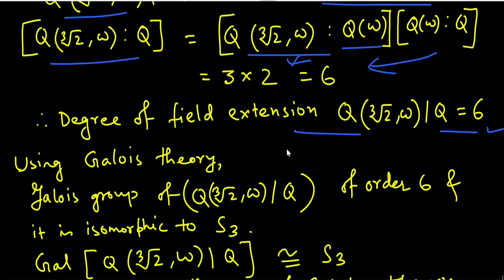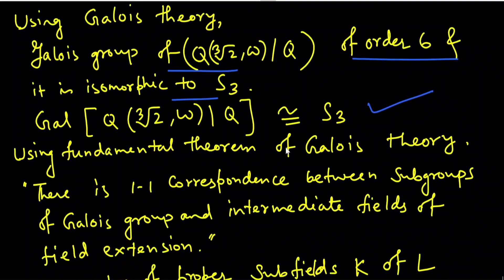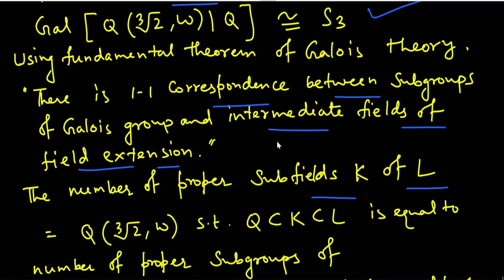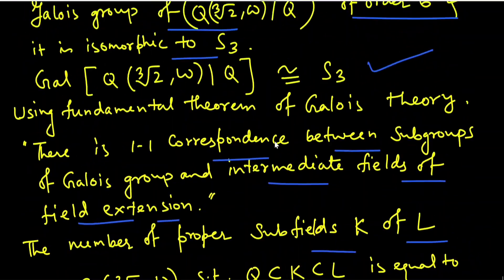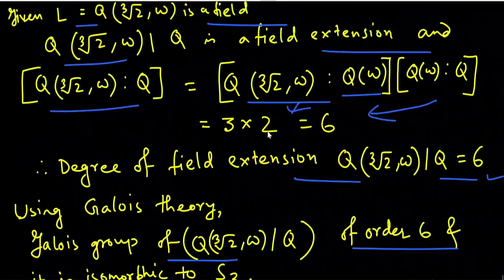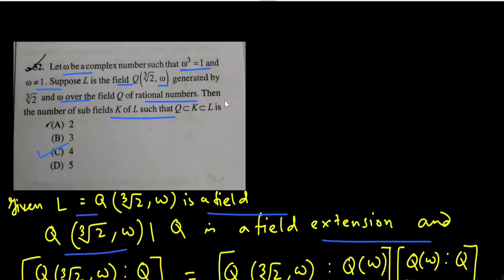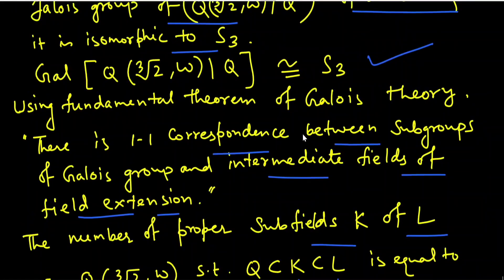Using Galois theory, the Galois group of this extension of order 6 is isomorphic to S₃. By the fundamental theorem of Galois theory, there is a one-to-one correspondence between subgroups of the Galois group and intermediate fields of the extension. The number of proper subfields K of L such that Q ⊊ K ⊊ L equals the number of proper subgroups of S₃, which is 4. So the correct answer is 4. This is the last question for this video — please like, share, and subscribe. Thank you, see you in the next video.